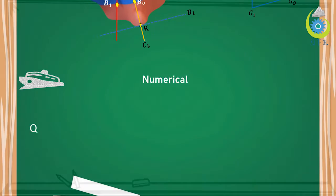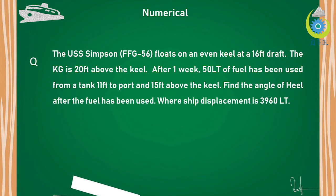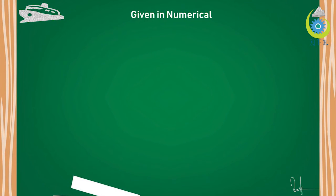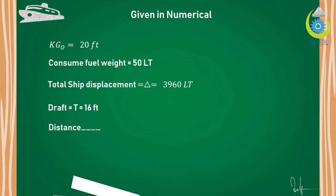Let's move forward to the numerical. The USS Simpson FFG-56 floats on an even keel at a draft of 16 feet. The KG is 20 feet above the keel. After one week, 50 liters of fuel has been consumed from a tank located 11 feet to the port side and 15 feet above the keel. Find the angle of heel after the fuel has been consumed. The ship displacement is given as 3960 liters. Given values: KG = 20 ft, consumed fuel = 50 liters, total displacement = 3960 liters, draft = 16 ft.